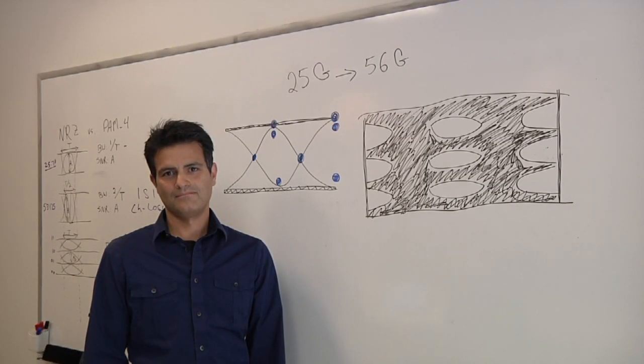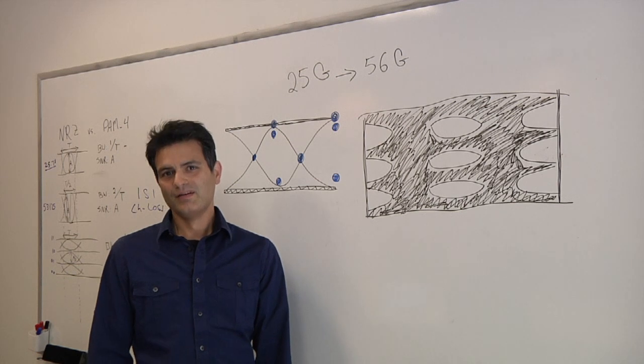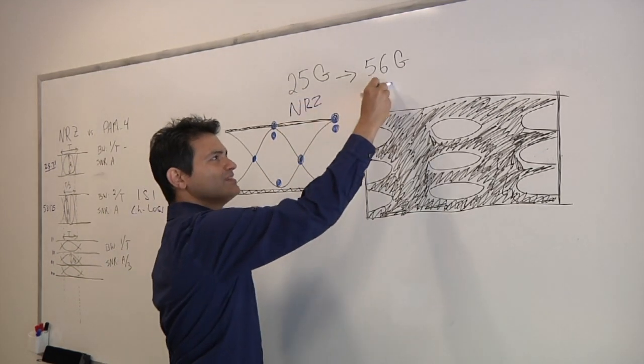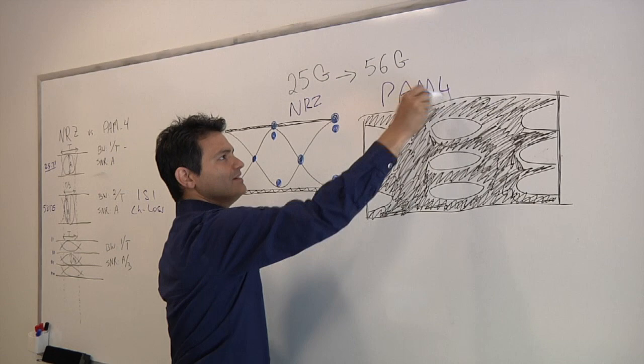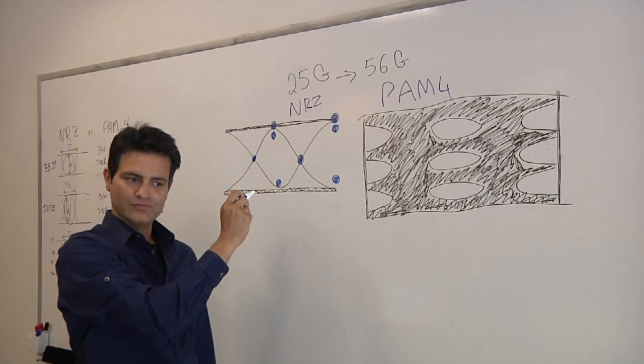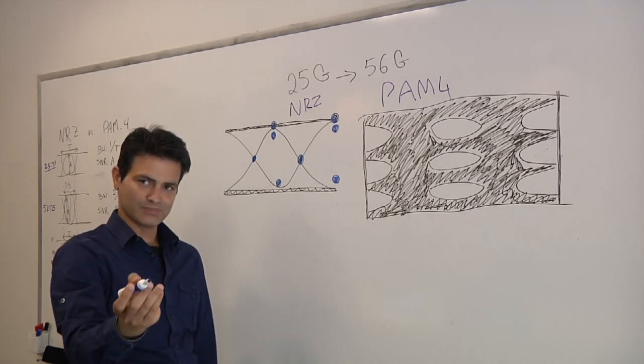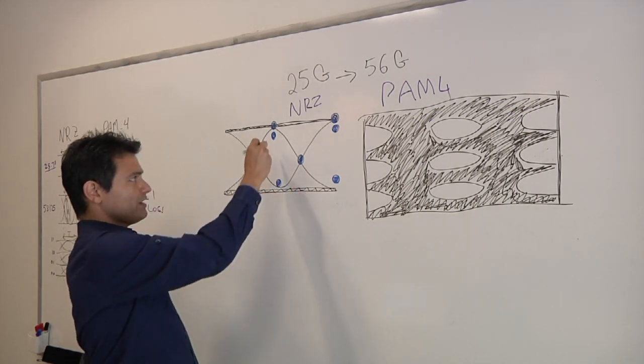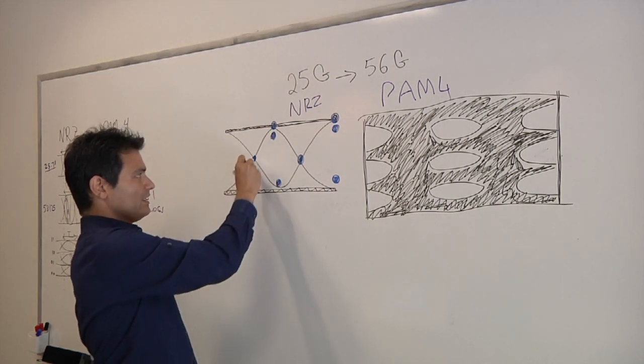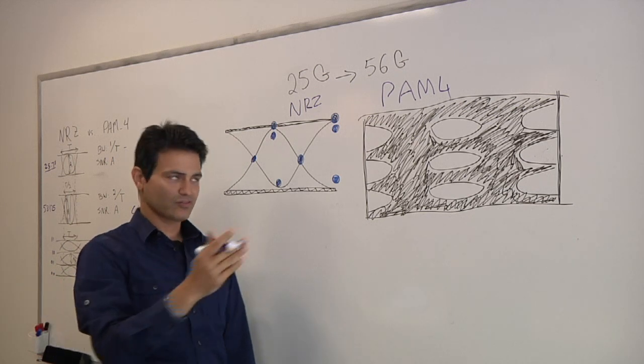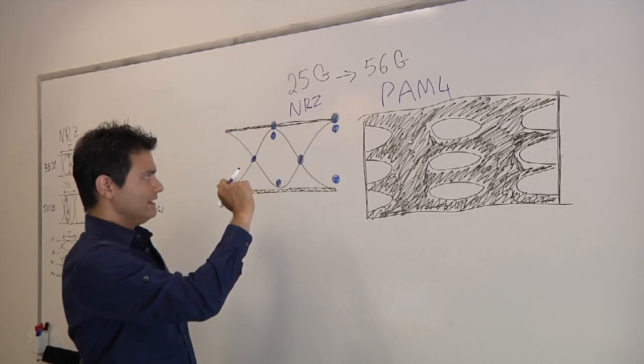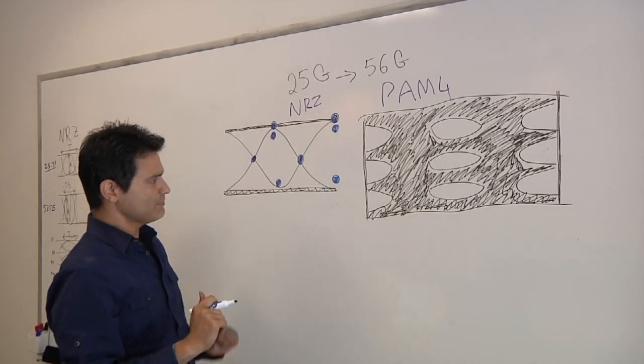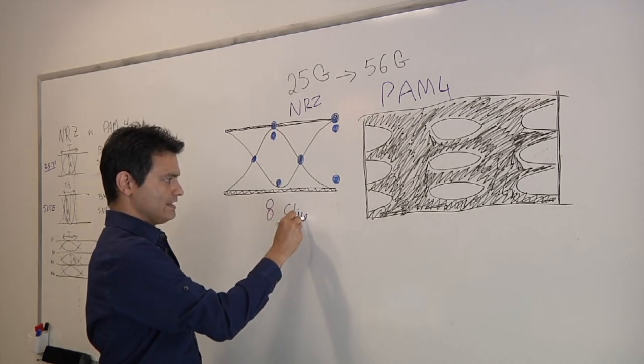You talked a little bit about the NRZ versus the PAM-4. What do the architectures look like and how do they differ? This is our traditional 25 gig NRZ architecture. Now, in the 25 gig realm, it's very standard slicer plus CDR-based approach. This is a half-rate architecture with one DFE tap unrolled. So we have these data high, data low slicers. We have these phase slicers here. Because this is a half-rate architecture, we are looking at two eyes simultaneously. And then we have an error slicer here, just collecting statistical information. To sum it up, we need a minimum of eight slicers for a NRZ architecture.